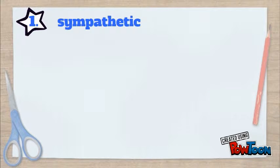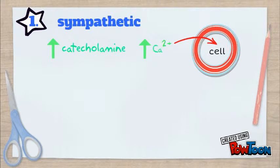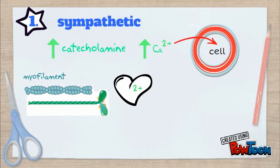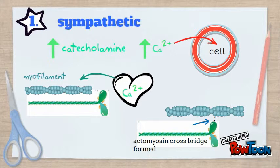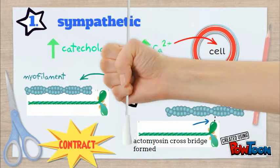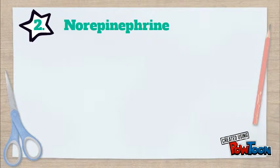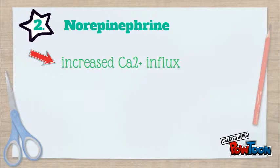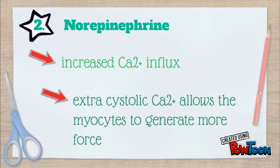For sympathetic stimulation, when calcium movement into the cytoplasm increases, the affinity of myofilaments towards calcium ions increases. More actin-myosin cross-bridges are formed, and the contraction becomes more forceful.